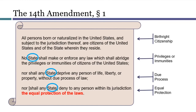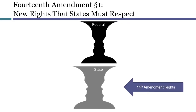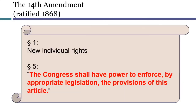One major difference between the Reconstruction Amendments and the previously enacted portions of the Bill of Rights was their explicit application to state governments. Before the Reconstruction Amendments, states only needed to respect those individual rights found in state constitutions. Now the U.S. Constitution required states to respect certain federally protected individual rights. This diagram symbolizes how the new rights created by Section 1 of the 14th Amendment imposed a new set of limits on how states could exercise their sovereign powers. Like the 13th Amendment, the 14th Amendment also created a new federal power to enact laws to enforce the individual rights created elsewhere in the amendment.